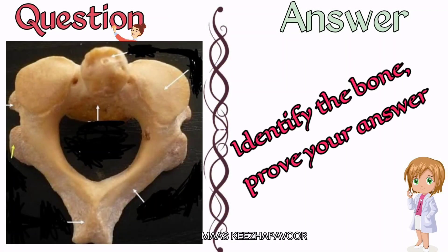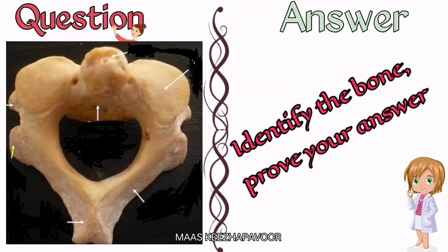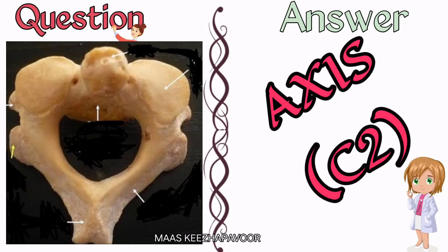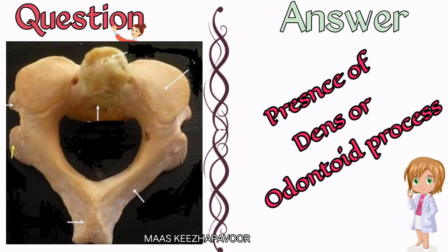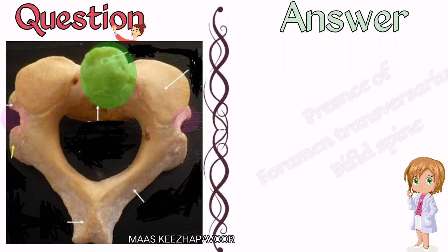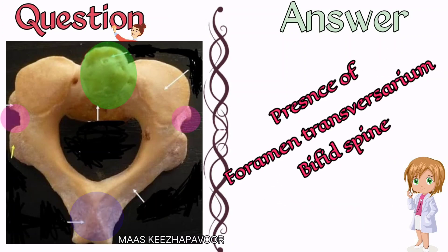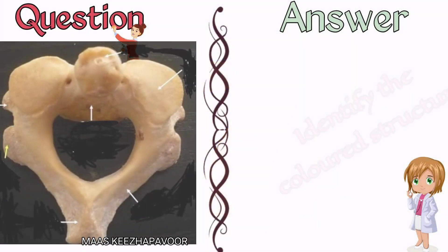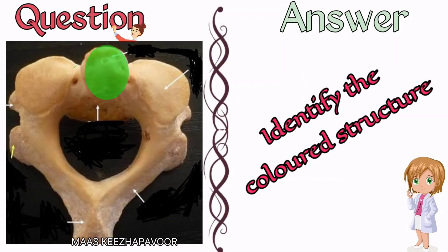Identify the bone and prove your answer with salient features. The given bone is the axis, the second cervical vertebra. Presence of dens or odontoid process, foramen transversarium, and bifid spine prove that this is the second cervical vertebra, axis.